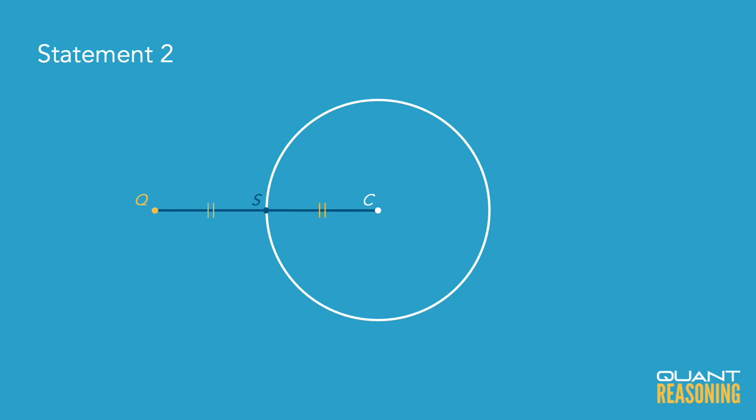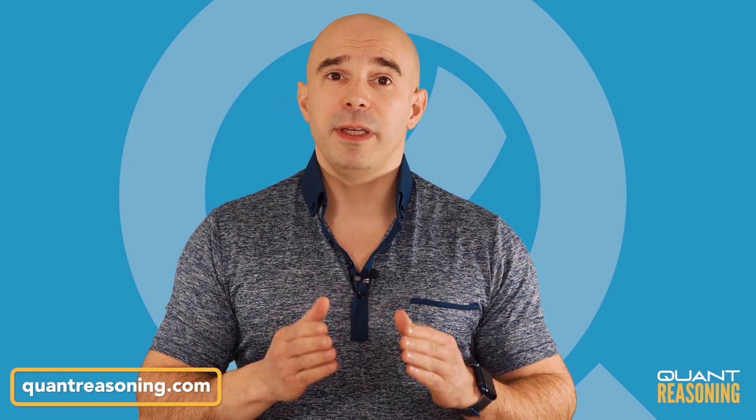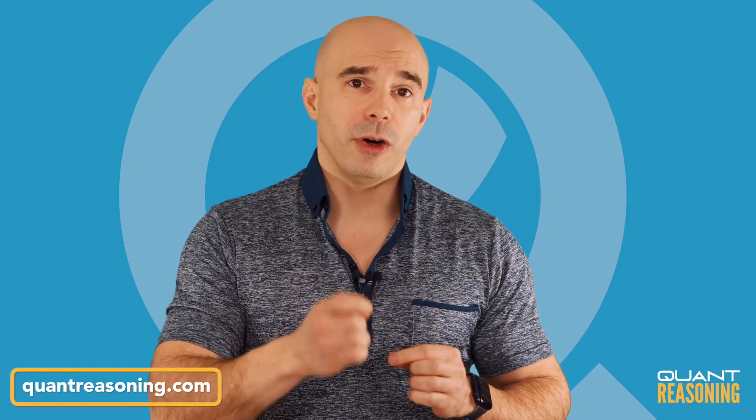is the same as the distance between Q and S. So we have some point on the circumference called S and we know that Q is exactly one radius away from S. Does that mean that Q is definitely on the circumference? No.